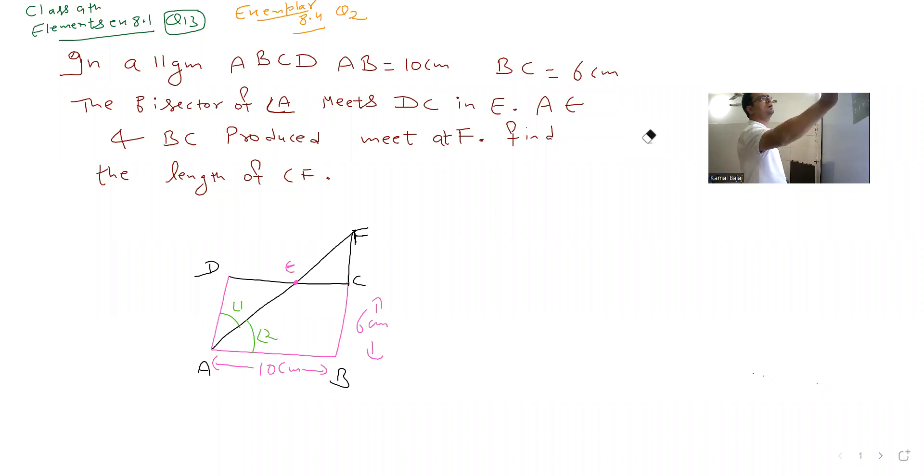Hello everyone, this question you will get in class 9th Elements exercise 8.1 question 13 and in Exemplars exercise 8.4 question 2. The difference is that the Exemplars has not given the diagram, and the Elements has given the diagram. There's a little bit of difference: Elements gives BC equals 6 cm, and the Exemplars gives AD equals 6 cm.